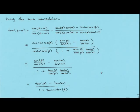We can do the same thing for the tangent of the difference. We write tangent of beta minus alpha as sine of beta minus alpha over cosine of beta minus alpha, then use our recently derived formulas: the numerator becomes sine of beta cosine of alpha minus sine of alpha cosine of beta, and the denominator becomes cosine of beta cosine of alpha plus sine of beta sine of alpha.